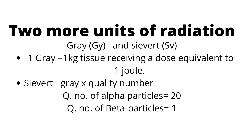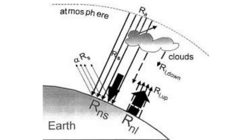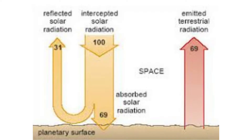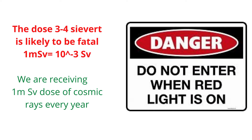Still, the safe level of radiation has not been determined. So, according to scientists' suggestions, no one should receive more than 0.05 Sv in a year. A dose of just 3 to 4 Sv is likely to be fatal. Since the Sievert unit is large, the more commonly used quantity is the millisievert. One millisievert is equal to 10 raised to the power minus 3 Sievert. We are also receiving a 1 millisievert dose of cosmic rays every day.